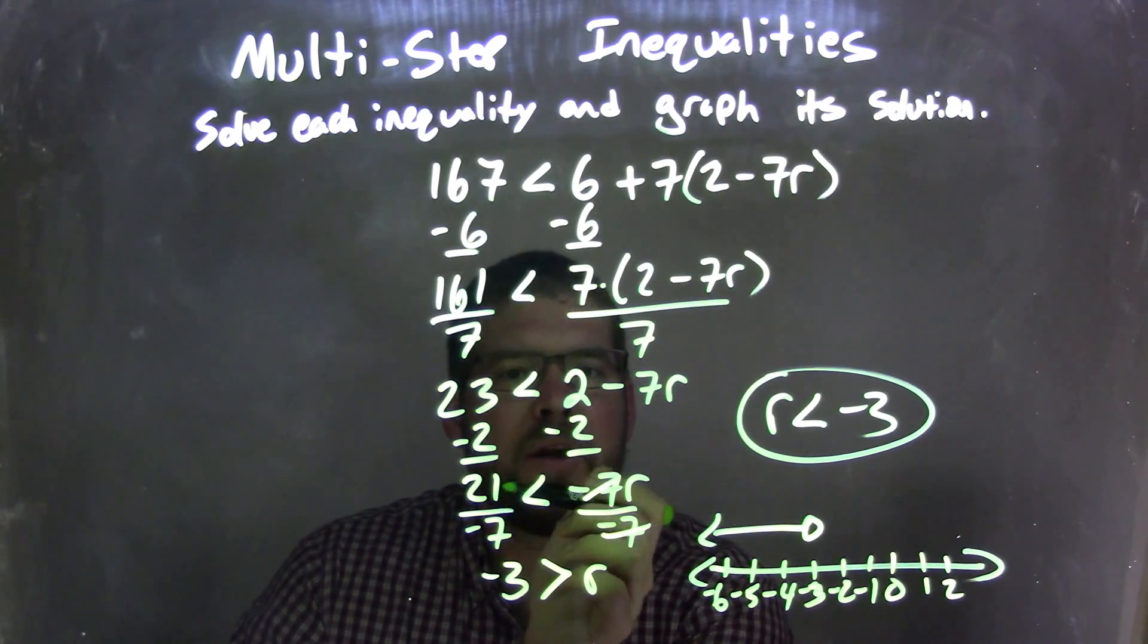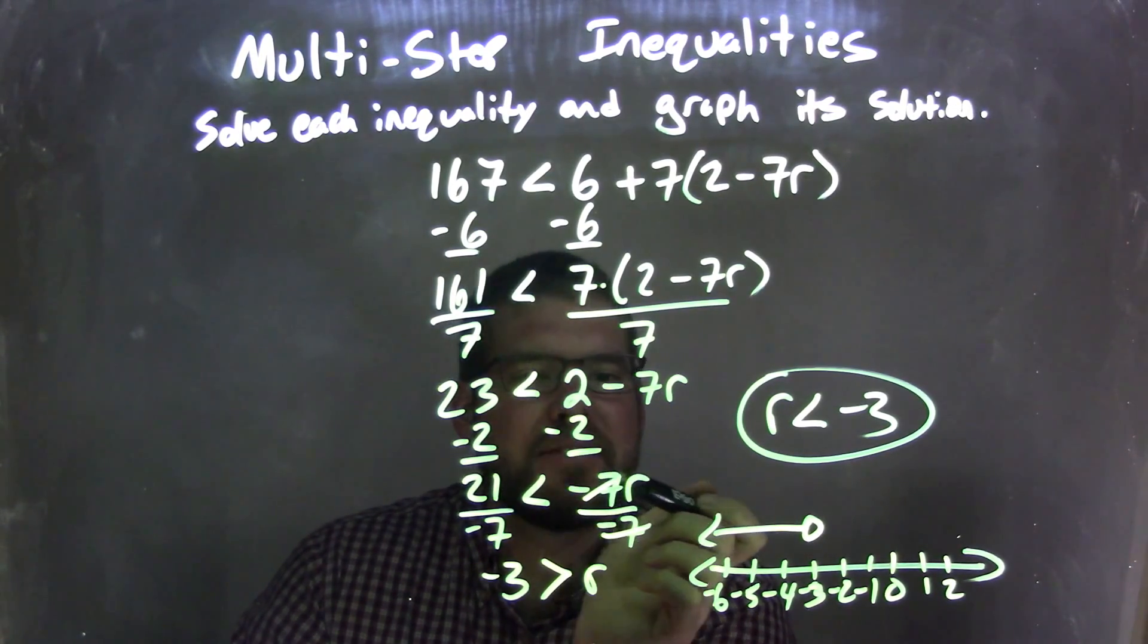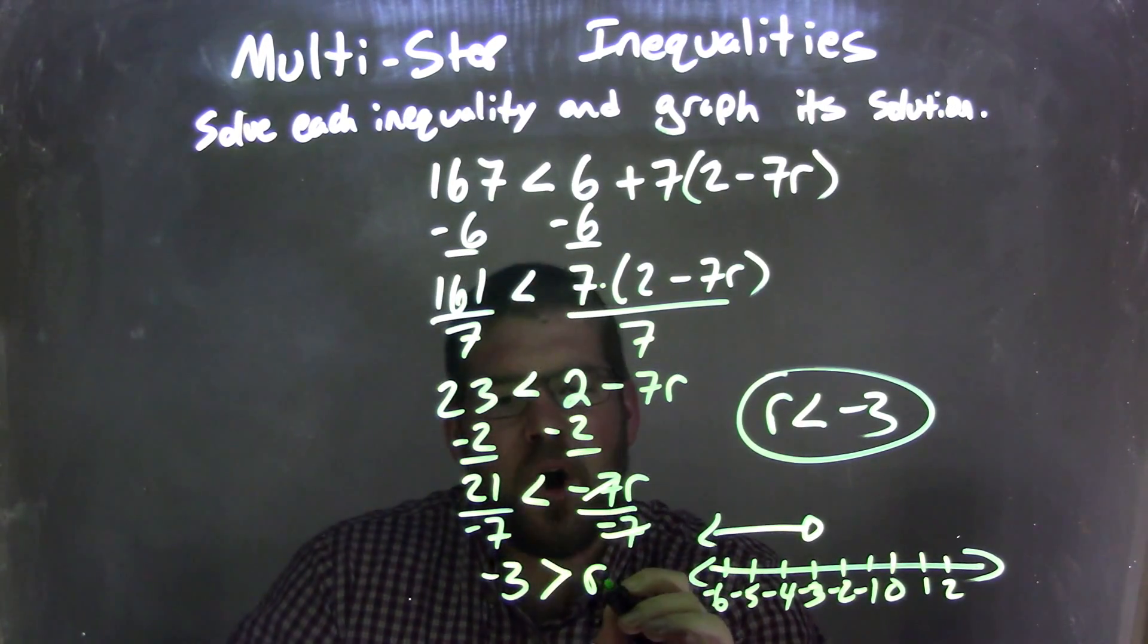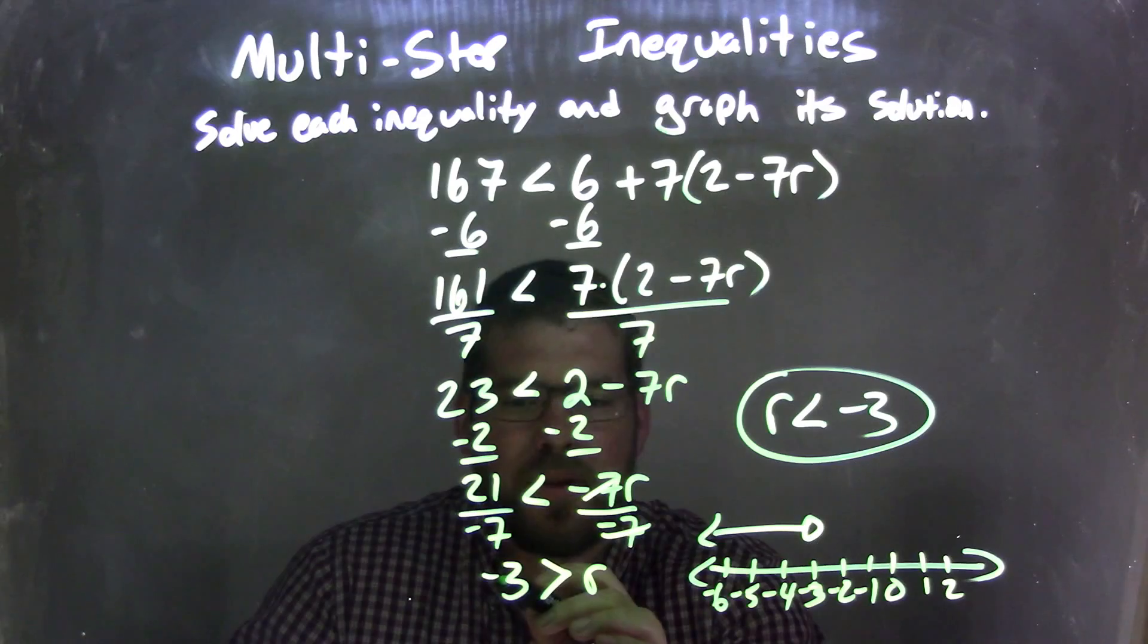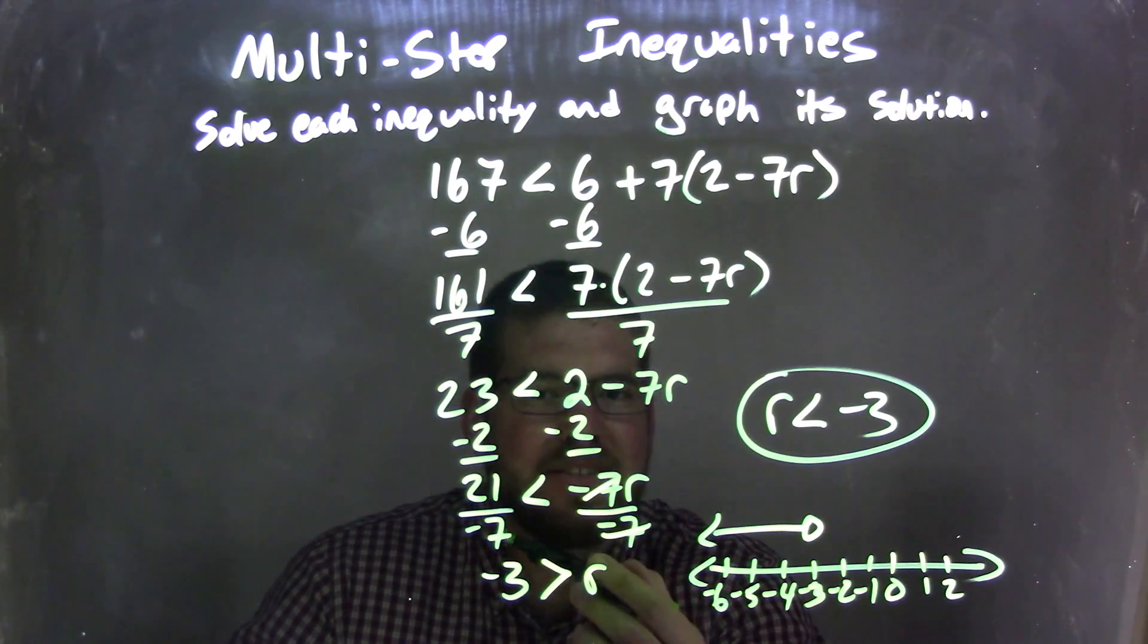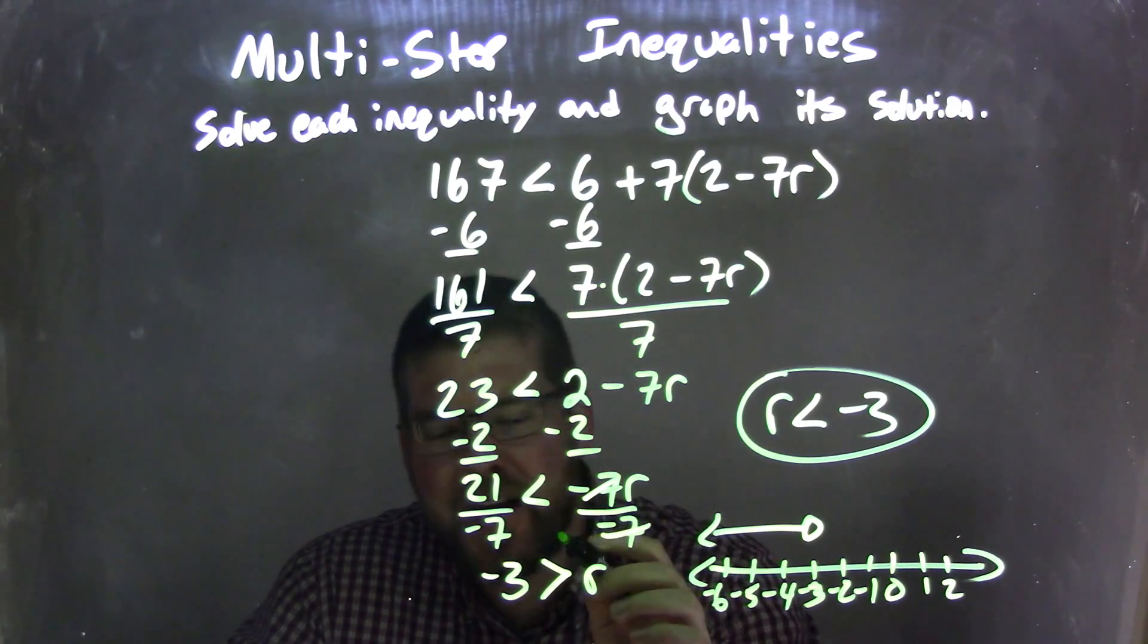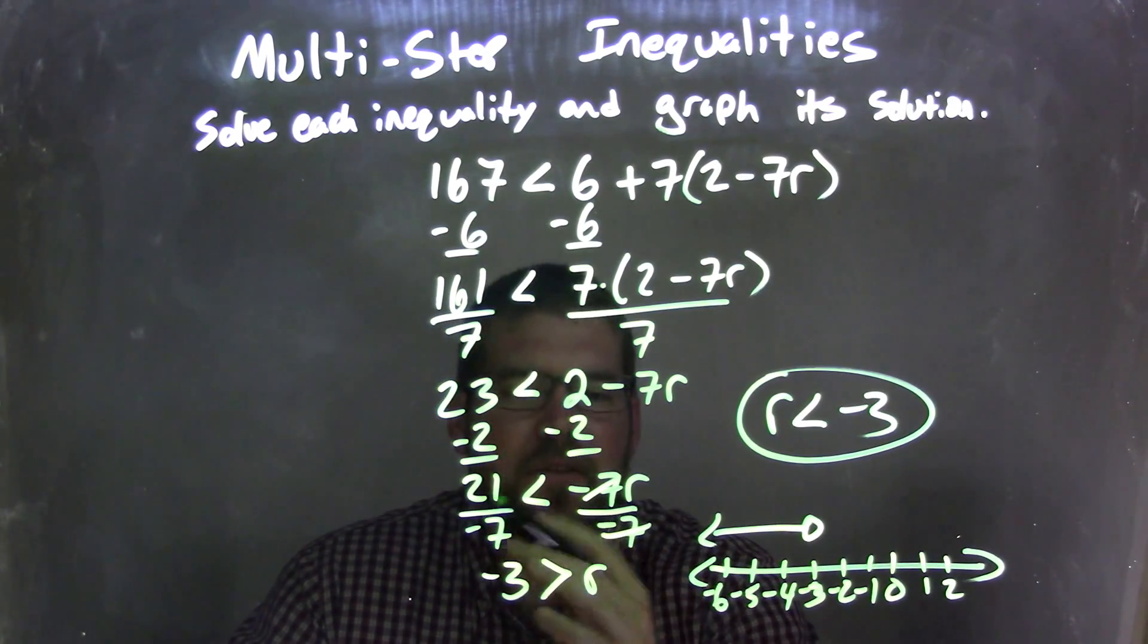Subtract 2 from both sides, giving me 21 on the left, which is less than negative 7r on the right. Divide by negative 7 on both sides, giving me r by itself on the right and negative 3 on the left because 21 divided by negative 7 is negative 3. But importantly, I needed to flip that inequality. Dividing by a negative over an inequality, it needs to flip.